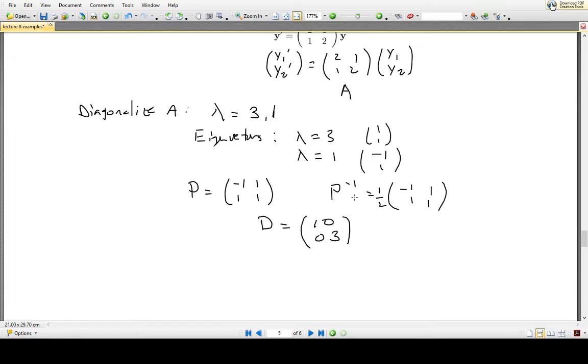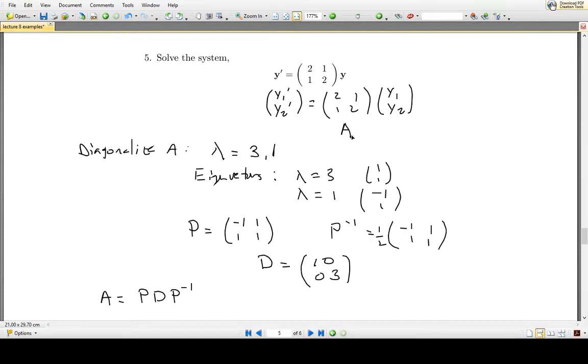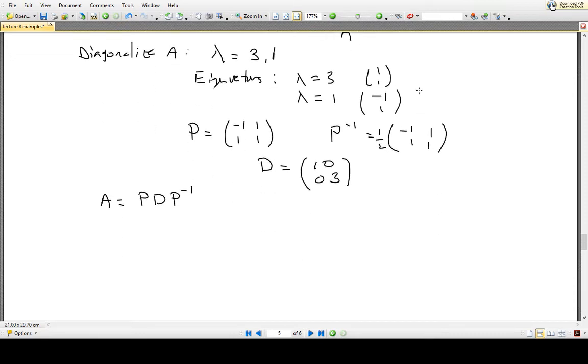So now with these matrices we can then rewrite, now that we've diagonalized A, we can rewrite A as P times the diagonal matrix times P inverse, which helps us because if we look at this system here, we have Y prime is equal to the matrix A times Y. We can now rewrite that as Y prime is equal to, instead of having A there, we have P diagonal matrix P inverse times Y.